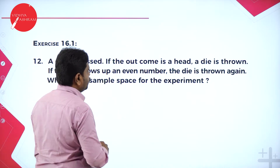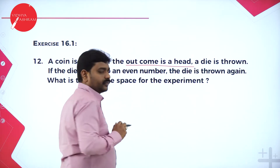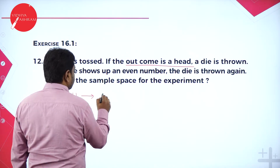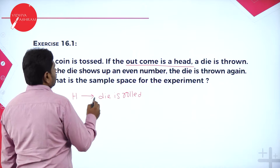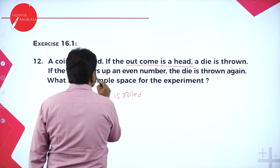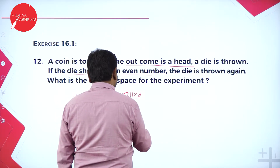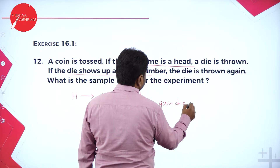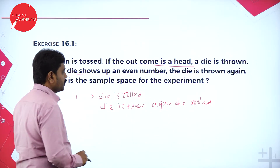Then a coin is tossed. If the outcome is head, a die is thrown. So you toss the coin — if you get head, throw a die. If head comes, throw the die. If the die shows an even number, then the die is rolled again. What is the sample space?